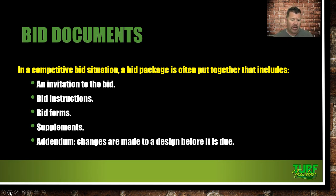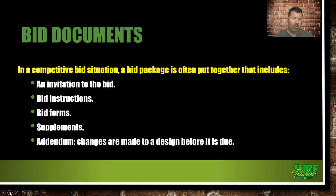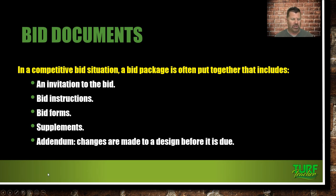You're going to see examples of the bid forms, a copy of a change order, and supplements included in the contract. You'll also see addendum changes made before the design is due — for instance, if the landscape architect had to swap red crepe myrtles for pink ones because the owner requested it. You want to see the original design and those changes to understand where the owner's thinking is and what's going on with the project.